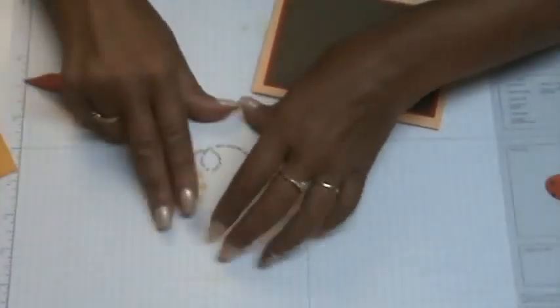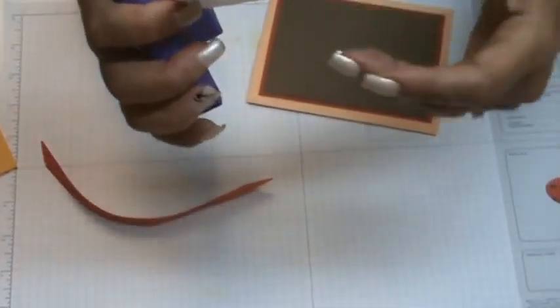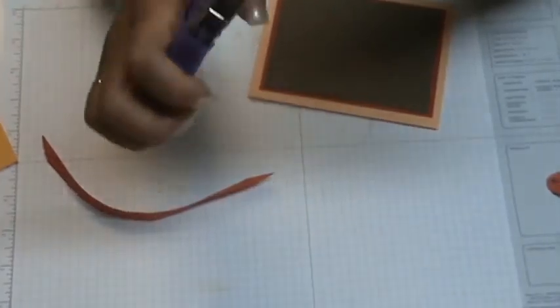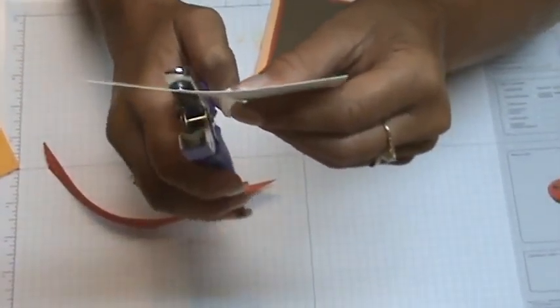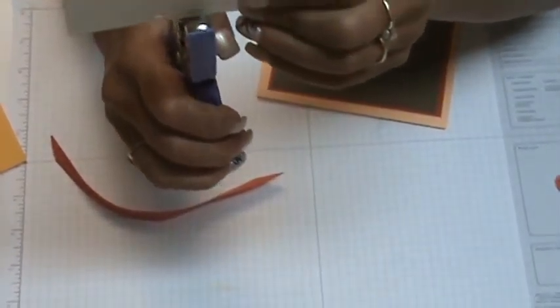Now for my ribbon, what I'm going to use, I'm using this 3/16 inch punch and I'm going to make two punches, right? And I'm going to try to do this in the middle, right here, one here and one here.